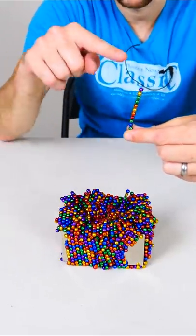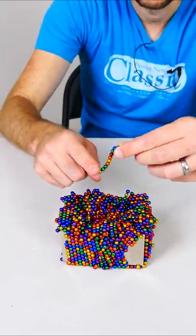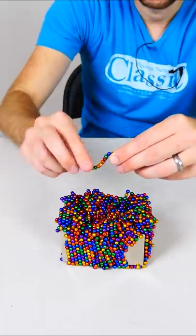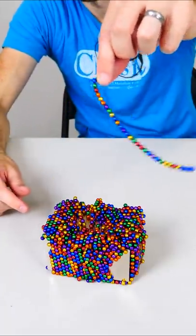So the opposite pole is pointing away from the magnet. Look what happens when I try to bring it close to it. It's like a snake or something.